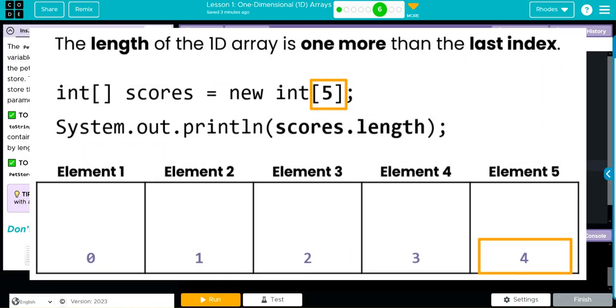Finally, we talked about length, which returns how many elements can be stored in an array. Remember, an array is immutable—it can't change once we create it. Because of this, we can't add more elements, so it's really helpful to know how many elements we have.